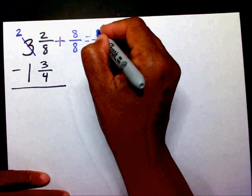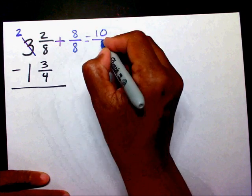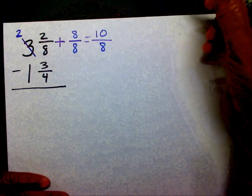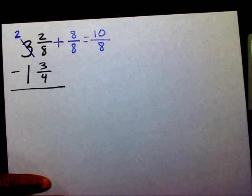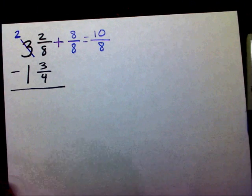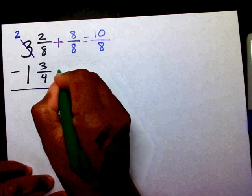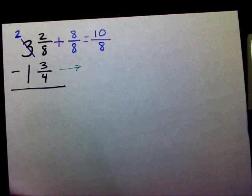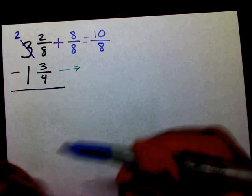Now that I have the same denominator, I can just add across. Two plus eight is ten — keep my same denominator of eight. Now I'm going to bring this one and three-fourths over.